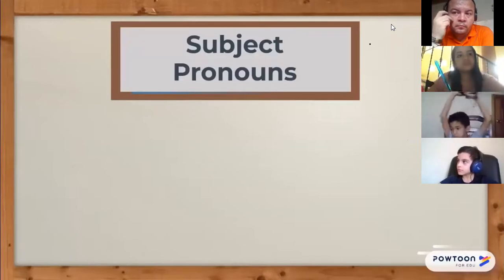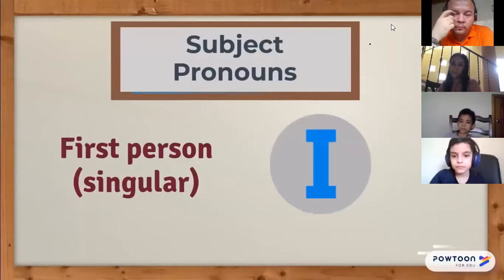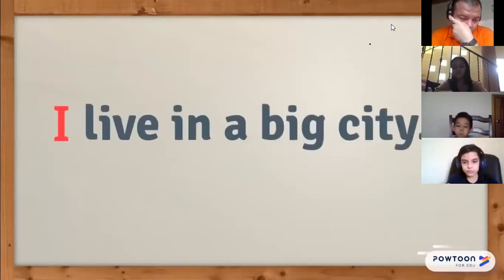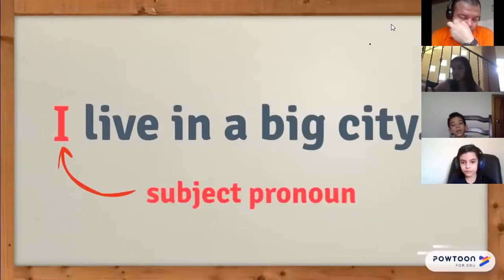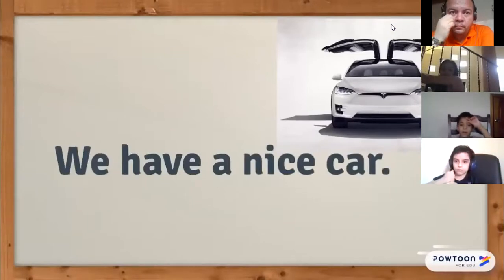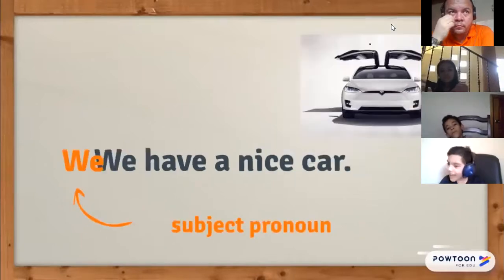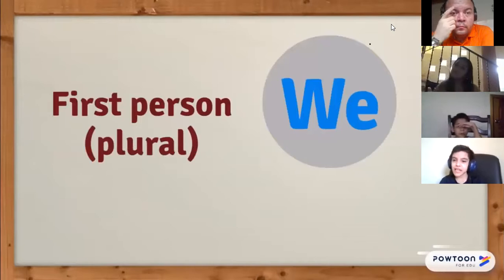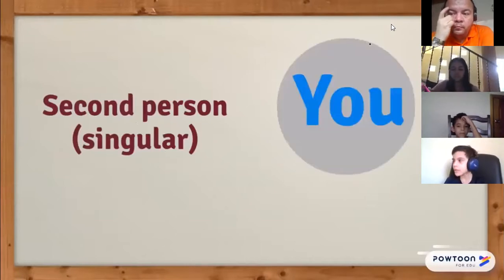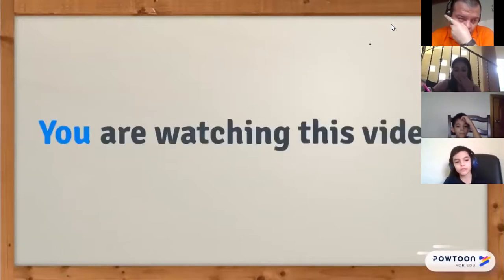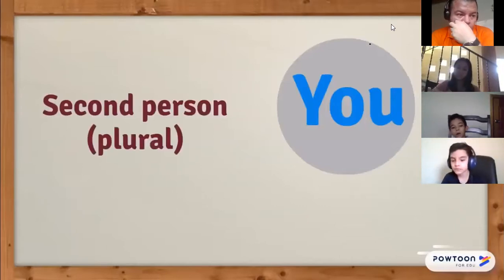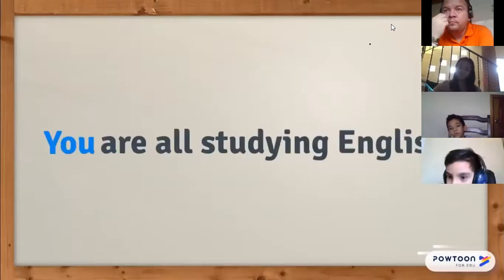For the first person singular we use 'I.' For example: 'I live in a big city.' In this sentence 'I' is a subject pronoun. Next: 'We have a nice car.' Here 'we' is the subject pronoun — the plural form of the first person. For the second person singular, the subject pronoun is 'you.' For example: 'You are watching this video.' Interestingly, 'you' is also the subject pronoun for the second person plural. For example: 'You are all studying English.'